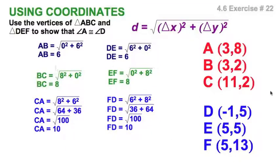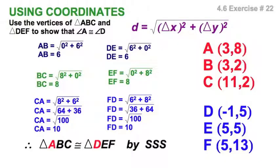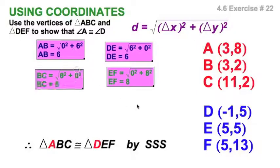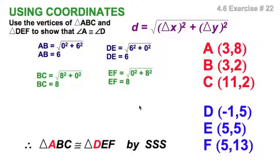So 6, 8, 10, 6, 8, 10, the sides all match. The triangles are congruent by side, side, side. Now, if you were a crafty individual, you would have done this. You would have stopped right here. You would have noticed that you're dealing with, in both cases, one horizontal, one vertical segment.